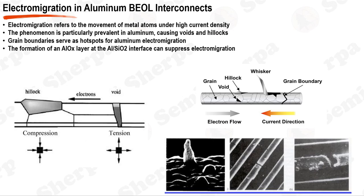While interfaces between aluminum and materials such as SiO2 can also influence electromigration, they are generally less susceptible than grain boundaries, primarily because a native aluminum oxide layer at these interfaces can serve as a diffusion barrier. Electromigration in aluminum interconnects presents a significant reliability challenge in BEOL processes of semiconductor manufacturing. The phenomenon is induced by the movement of aluminum atoms under high current densities, significantly dictated by factors like temperature, current density, and most notably the microstructure of the interconnect.